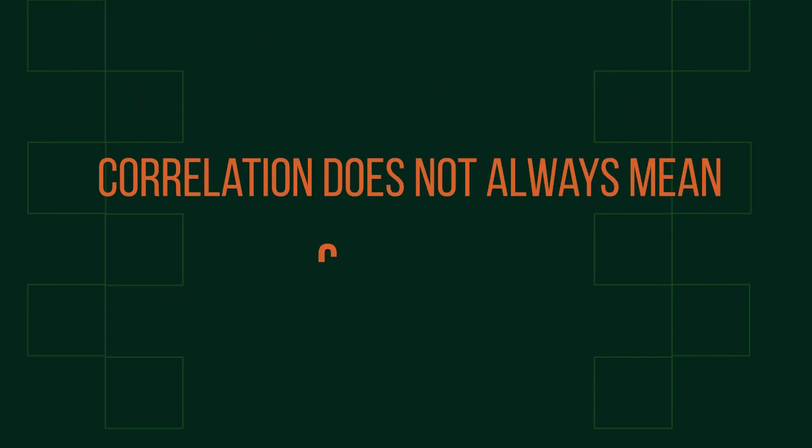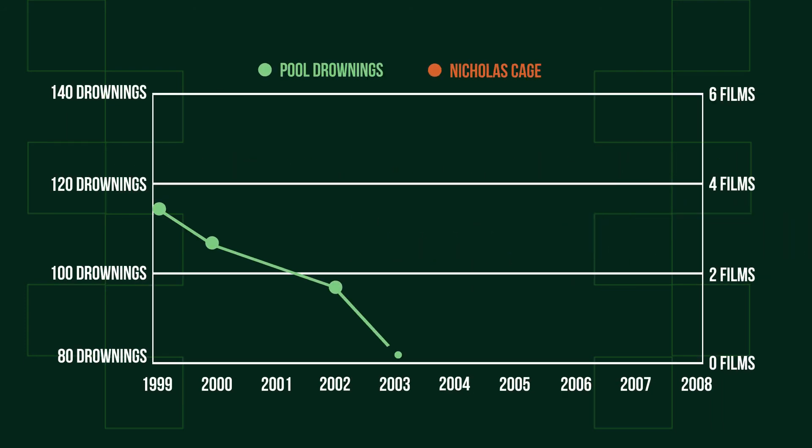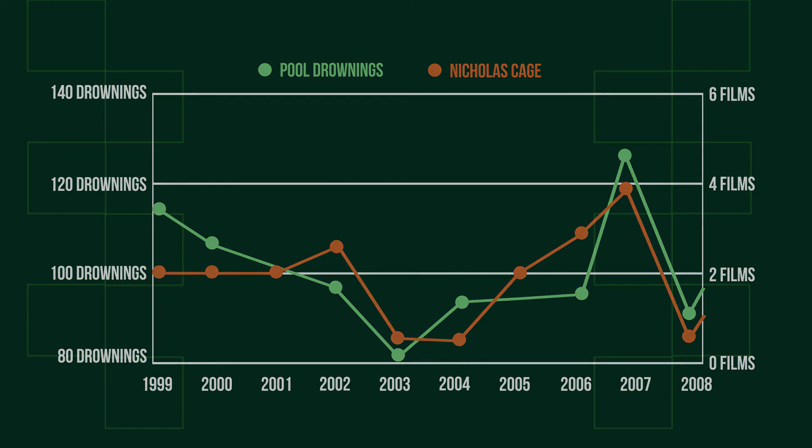We must also remember that correlation does not always mean causation. Just because the number of people who drown by falling into a pool and the number of films Nicolas Cage has starred in are correlated does not mean that one causes the other. He isn't going around shoving people into pools and people drowning doesn't make him want to act in movies.